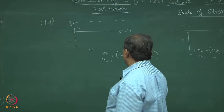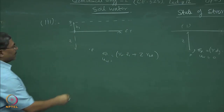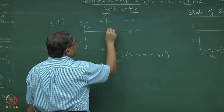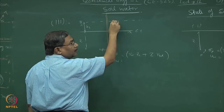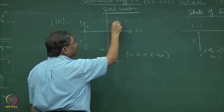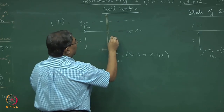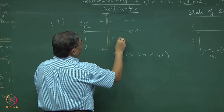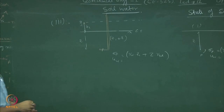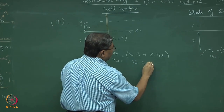What is the pore pressure at this point? Put the piezometer. If I put a piezometer here, the phreatic surface — exposed to the atmosphere — is at the water surface. So the height of the water column would be z1 plus z. That means u_w equals γ_w times (z1 plus z).